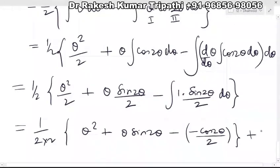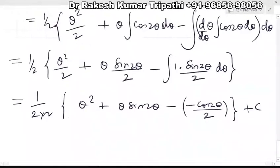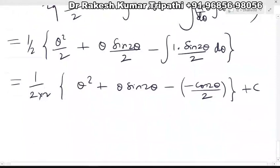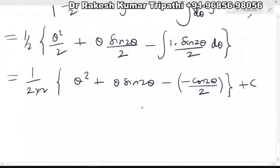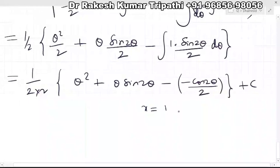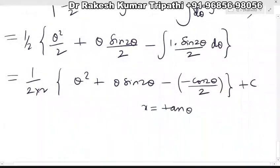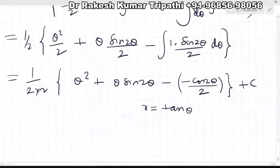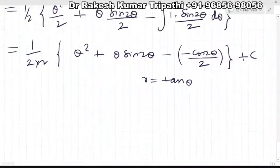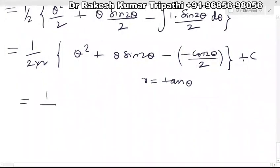Now the important thing is to eliminate θ. We have substituted x equal to tan θ. So instead of θ, you cannot directly write tan⁻¹x everywhere — the values should be very simplified. So let us see how this can be simplified.